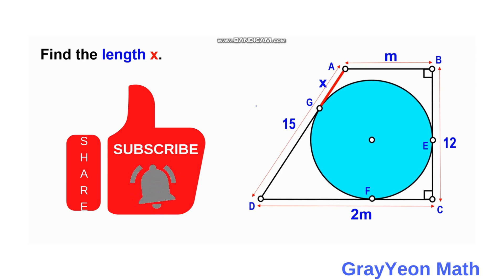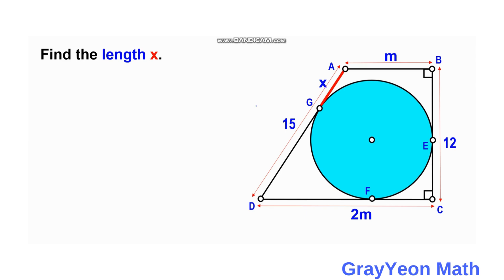We are required to find the length of X. First, we drop a line from point A down to CD perpendicular to CD, and we label the point of intersection as H. We label the length DH as 2M minus M, so DH equals M, because the total is 2M and we subtract HC which is M. Since AH is parallel and congruent to BC, AH is also 12 units.